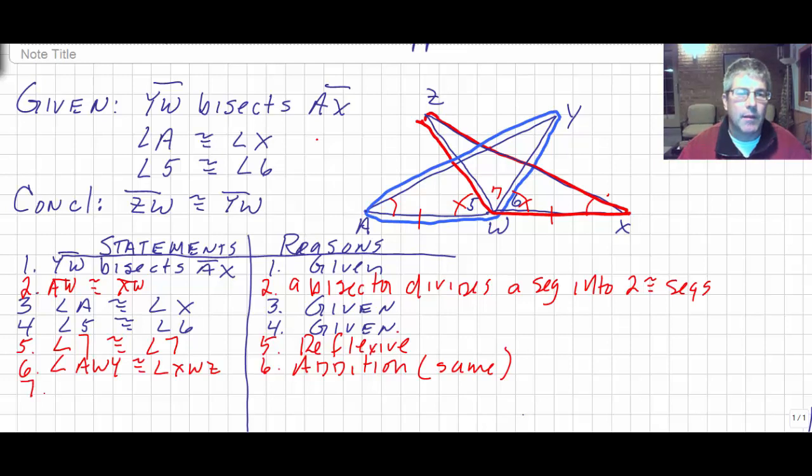And step 7, now we have triangle AWY. Now triangle AWY, AWY is congruent to triangle XWZ. So make sure you have your correct correspondence. And we do. And that is by angle, side, angle.